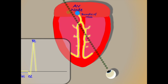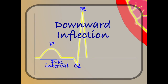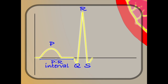Finally, the left and right bundles carry the electrical impulse around the left and right walls of the ventricle, taking the electrical impulse away from the eye. This gives us another downward inflection, which we label S. Together, Q, R, and S represent the contraction of the ventricles — they are collectively referred to as the QRS complex.